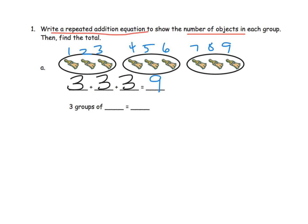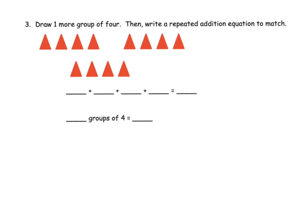The other way we're going to write it is: three groups of three equals nine. What's a little tricky here is that we have three groups of three, so the two numbers are the same. I wish this had been like four groups of three or three groups of two, but that's all right — don't let that trip your students up.